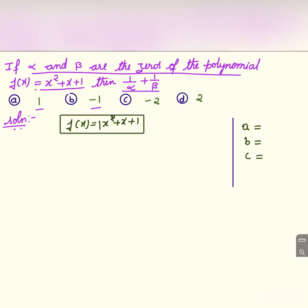We have been given 4 options. Let us see the correct option among these. Now in this polynomial, a = 1, b = 1, and c = 1.